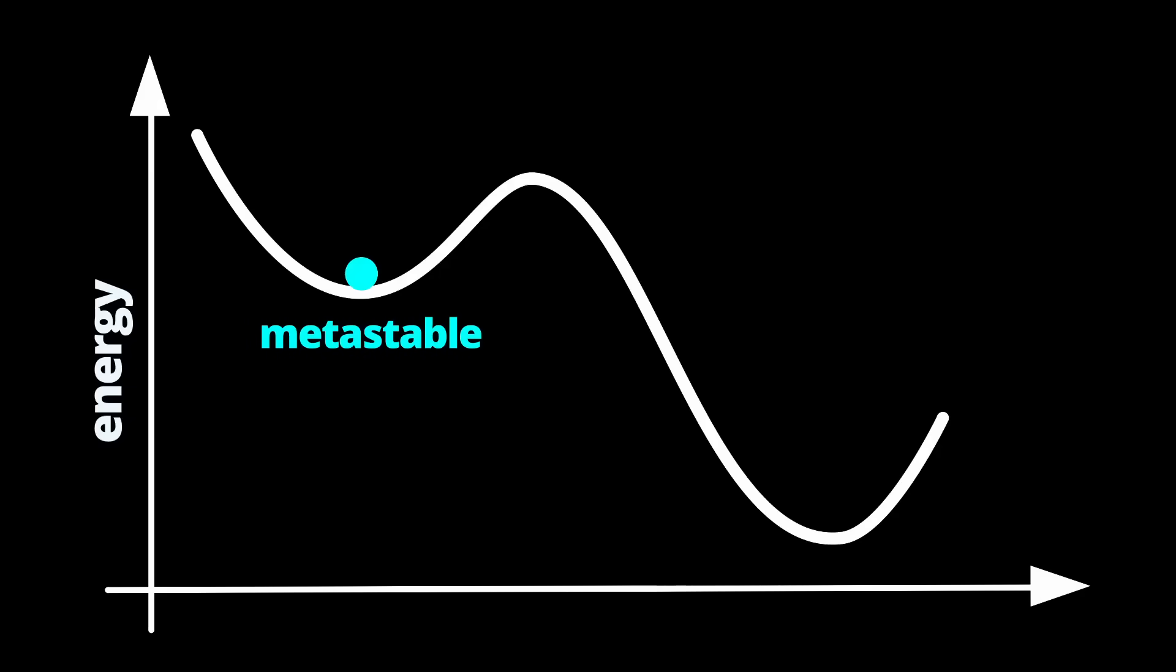This upper valley is the metastable state. You see, if the system is perturbed a bit, it'll roll back into the same valley, disturb it too much, and it'll roll over into this other valley.